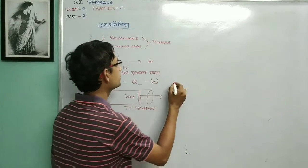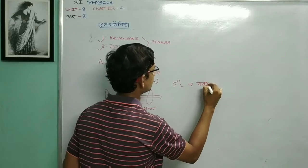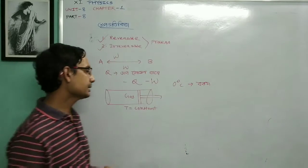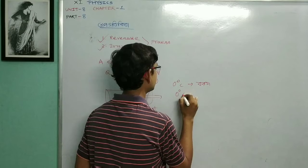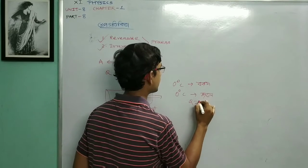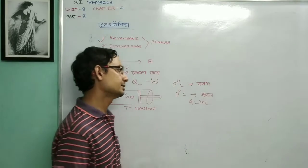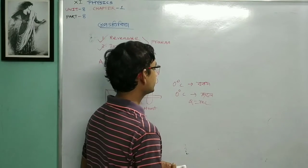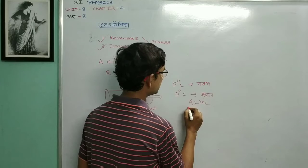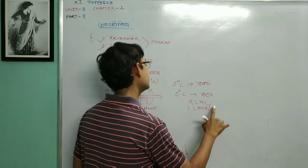Suppose 0 degree Celsius is greater than 0 degree Celsius. This is 0 degree Celsius, which is greater than 0 degree Celsius. When we have the class 7th, we have the idea of the class 11th. This is a weight of 80 calories per gram.